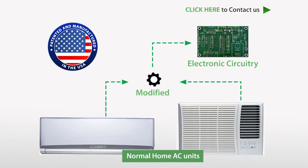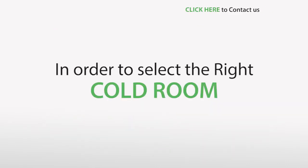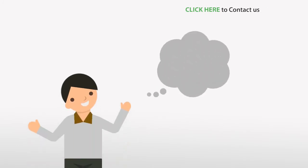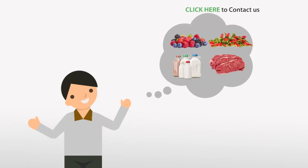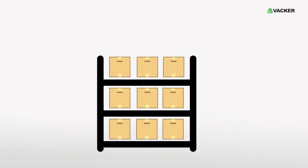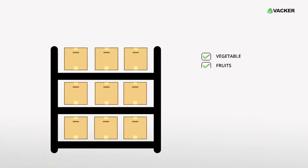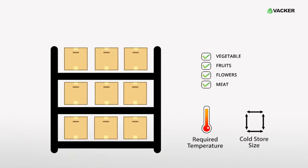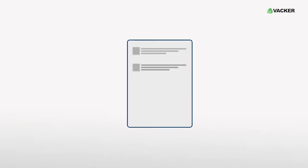In order to select the right cold room, first of all you have to decide the goods that are being stored. At different times you may be storing different goods. Considering all such goods, you can decide the required temperature and size of the cold store. Once you provide us with these details, we will design the cold room with either split AC units or window AC units.